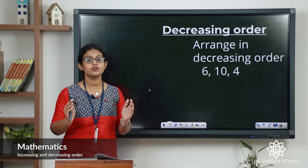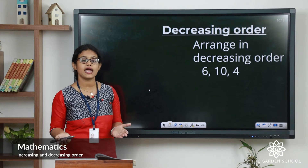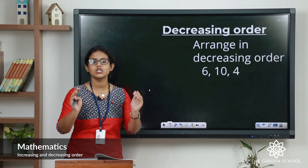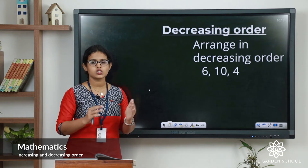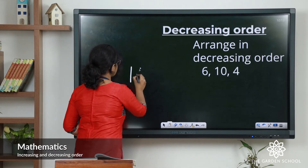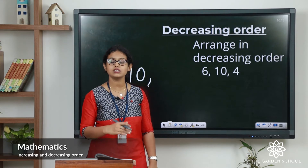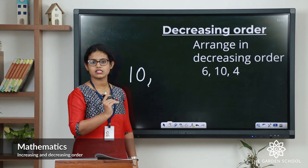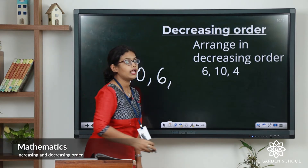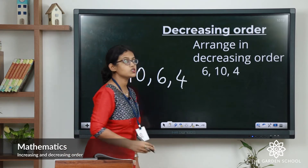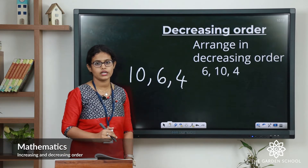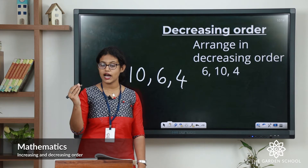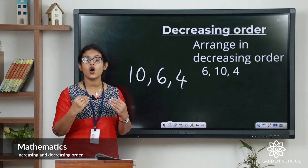Now let's arrange the numbers six, ten, and four in decreasing order. Two numbers are one-digit numbers and ten is a two-digit number. Two-digit numbers are always larger than one-digit numbers, so ten is the largest — let's write ten first. Now between six and four, doing backward counting: ten, nine, eight, seven, six — so six comes next. Then five, four — so four comes last. The correct order is ten, six, four. It starts with the larger number ten and ends with the smaller number four. This is decreasing order.